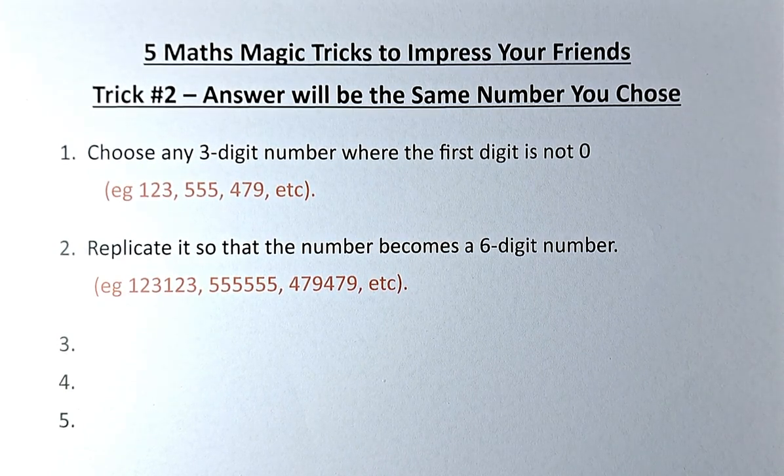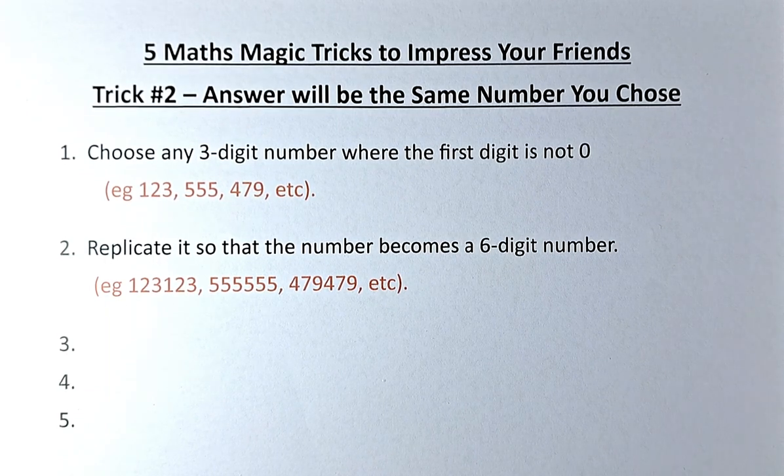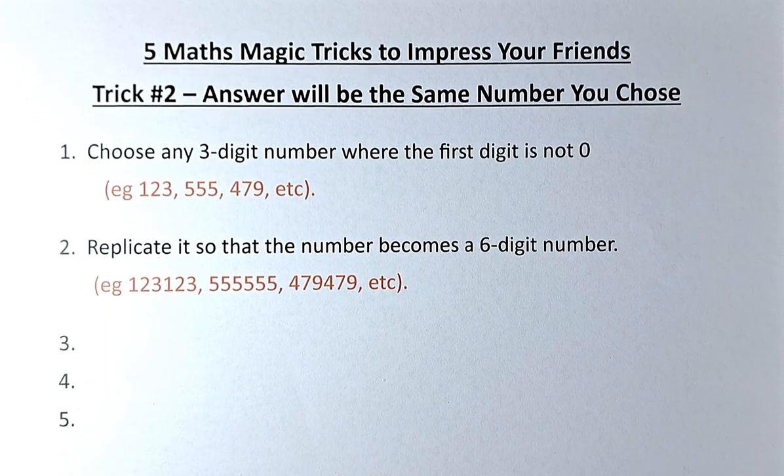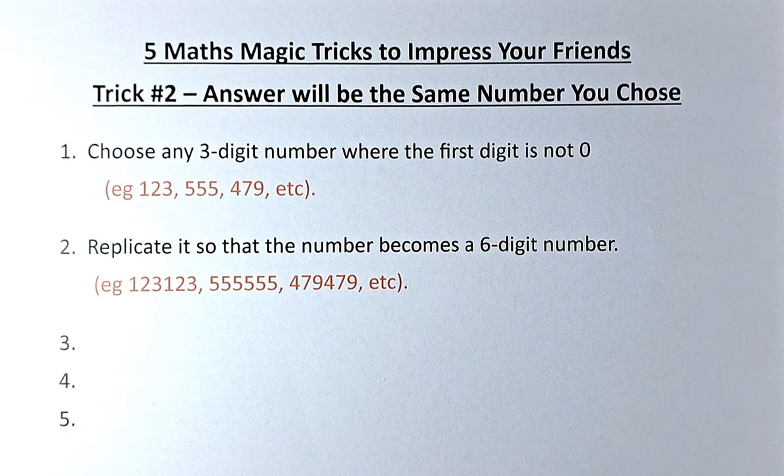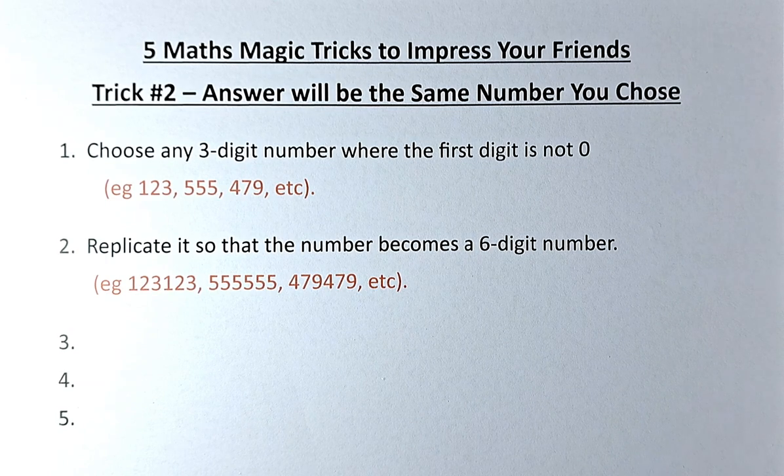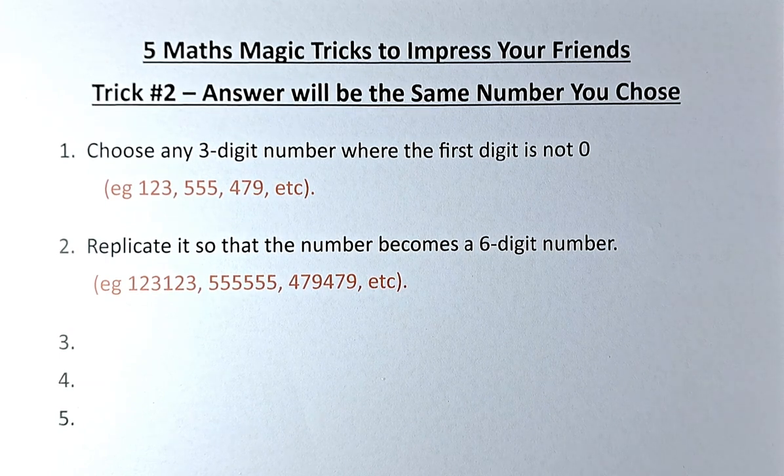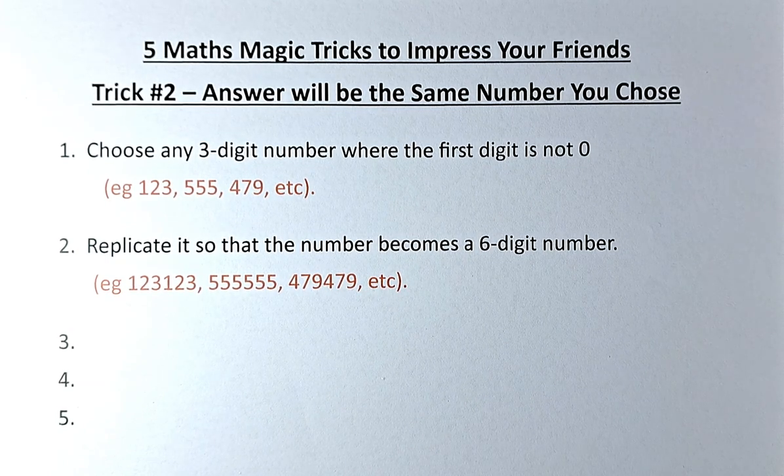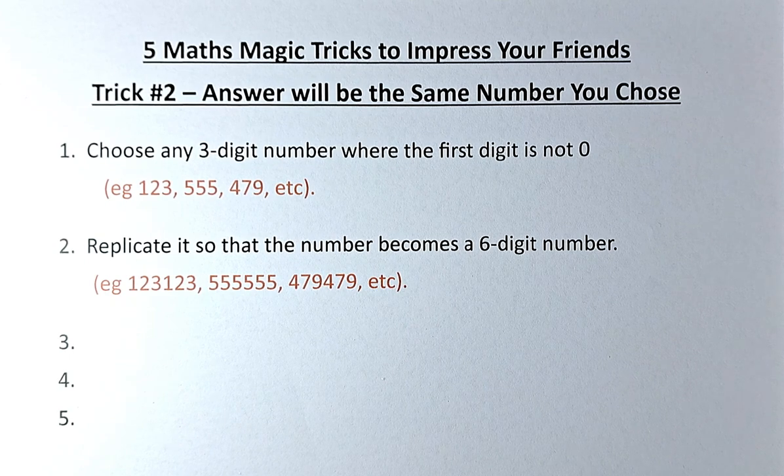So first, in this trick, you need to choose any three-digit number where the first digit is not zero. If it is a zero, then it becomes a two-digit number. So you can choose any number you like: 123, 555, 479, and any other three-digit number. Have you done it? Great!